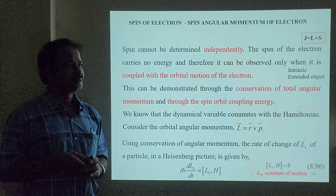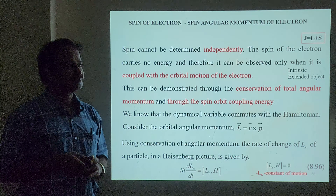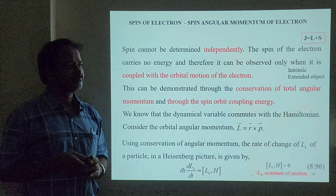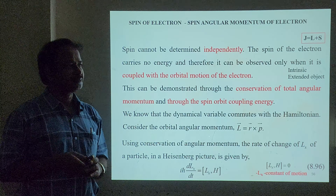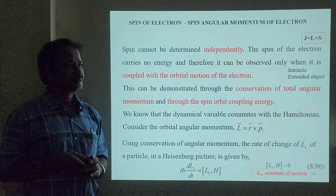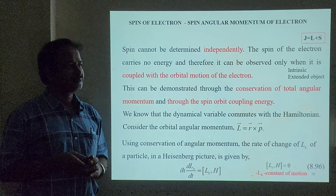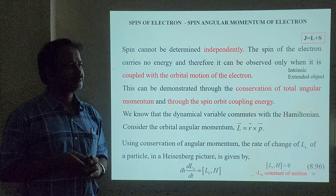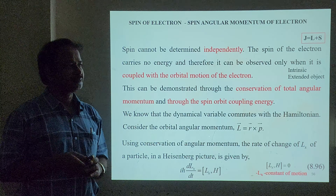We are going to replace H with the Dirac Hamiltonian: H = cα·p + βmc². We know already about α and β as 4×4 matrices. The α components αx, αy, αz are connected with Pauli's spin matrices. We find the commutator [Lx, H], where H is replaced with the Dirac Hamiltonian, and Lx = ypz − zpy.